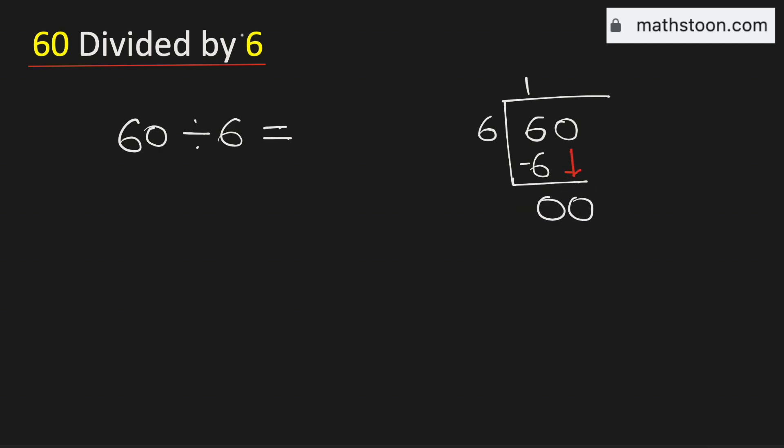Now see that this is still 0. As we have brought down the number 0 here, we need to divide it. Now we know that 6 times 0 is 0. Subtract and we get 0.